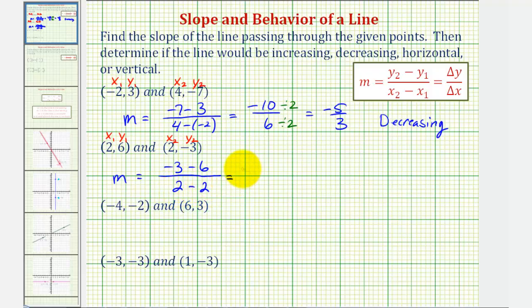Well, this would give us negative 9 divided by 0. Well, division by 0 is undefined, and therefore, we have a vertical line. But for our homework system, we're going to type in DNE for the slope. And again, because of this, we have a vertical line.